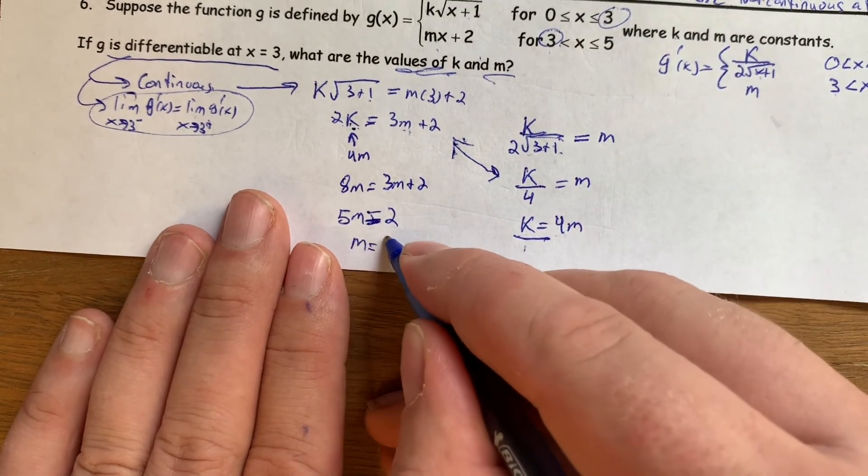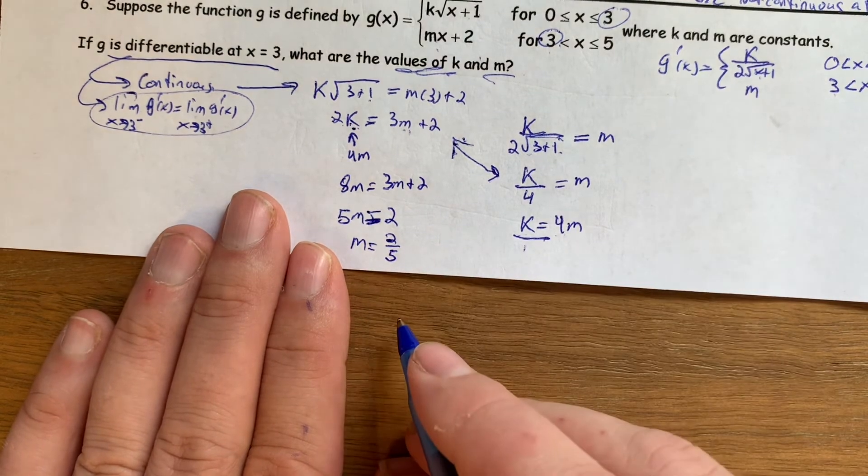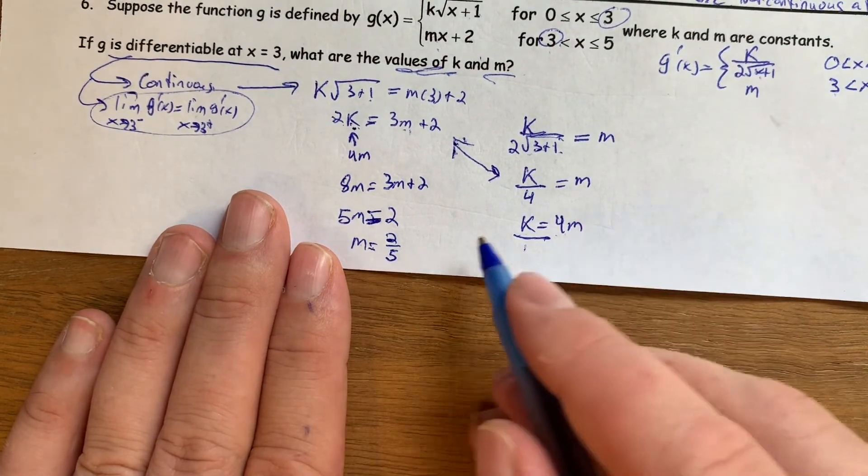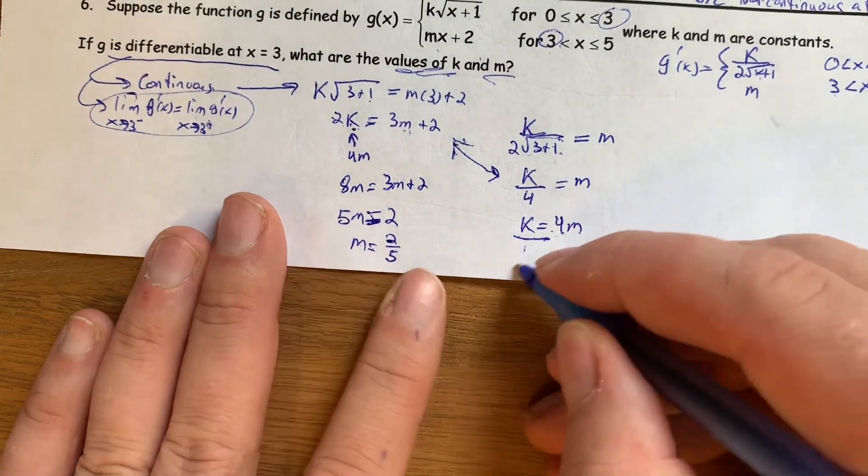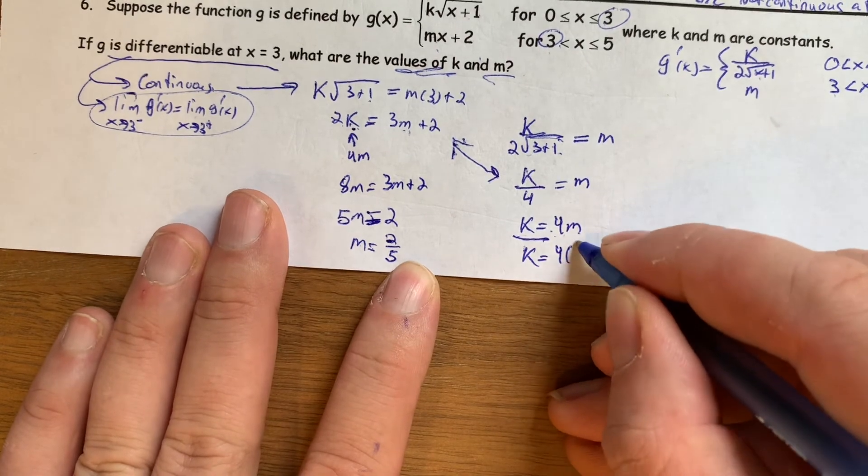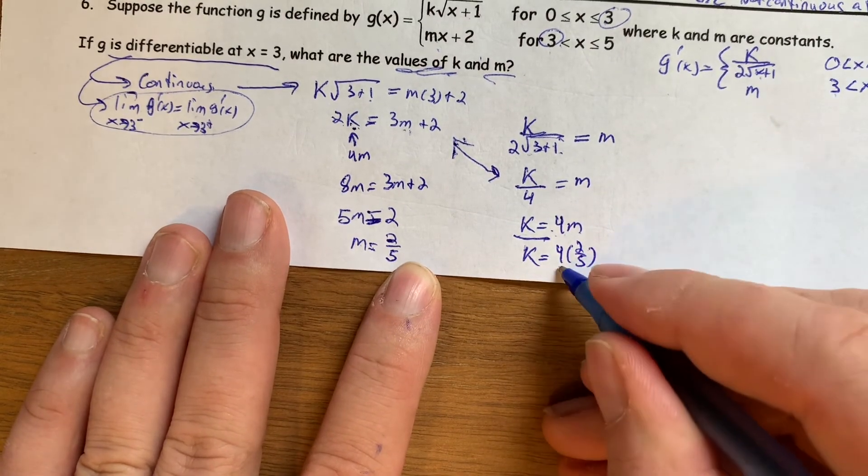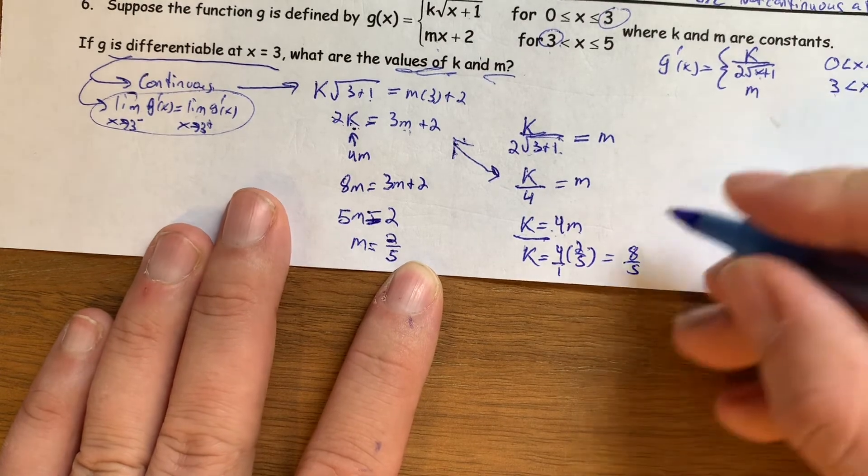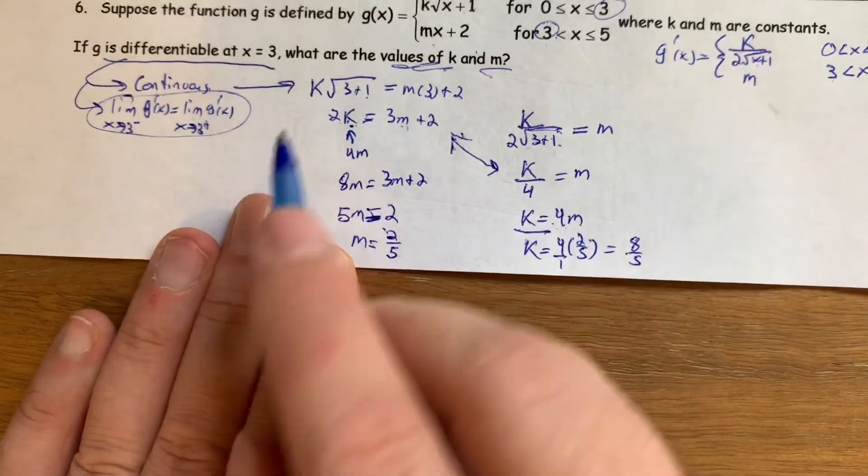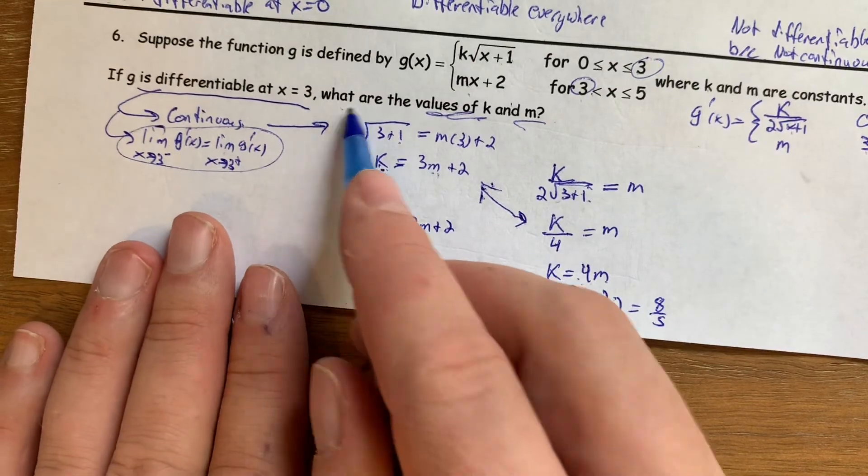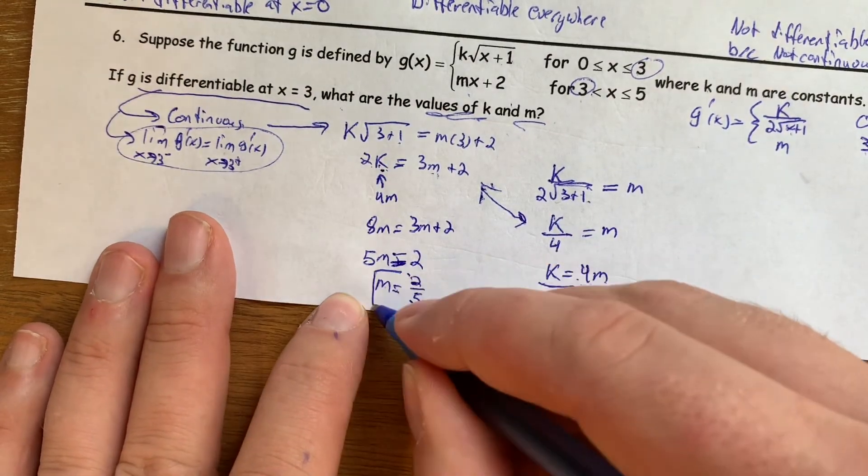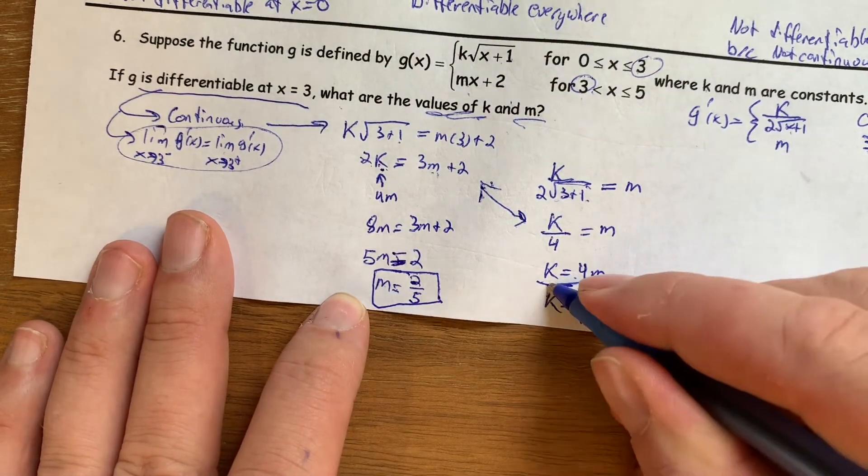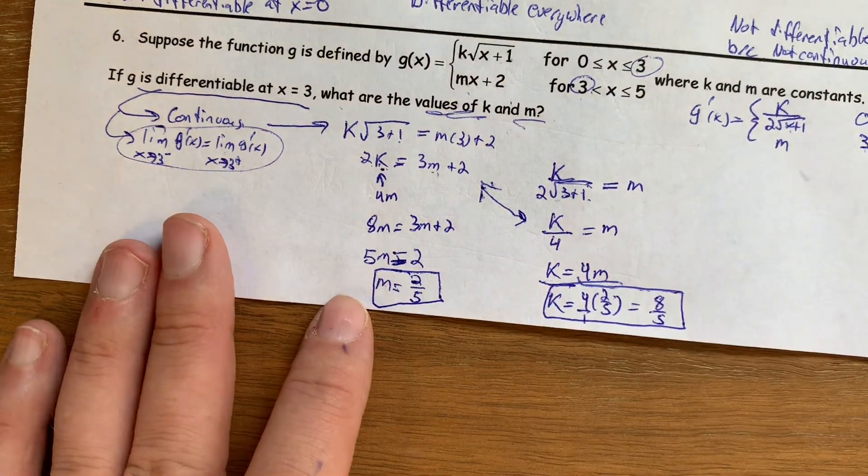equals 2, m is 2 fifths, and we have to go back and find what k is. So k was 4 times m, so k is 4 times 2 fifths, 4 over 1 times 2 over 5 is 8 fifths, and so this is the answer because it was, let's make sure we actually answered the question, what are the values of k and m? m is 2 fifths, k is 8 fifths, and that is the answer to that question.